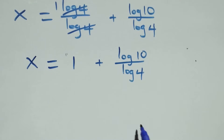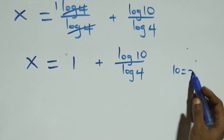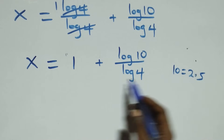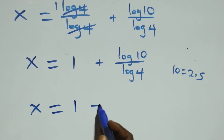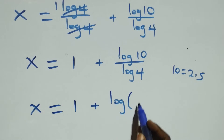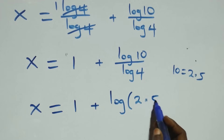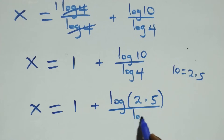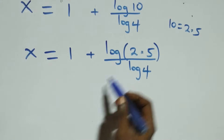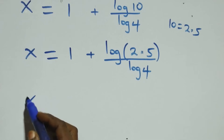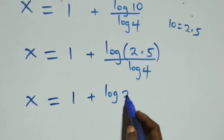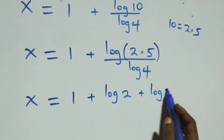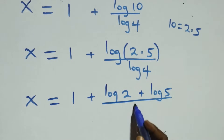From here we can express 10 as 2 times 5, so this becomes x equals 1 plus log of 2 times 5 over log 4. This also follows the product rule of logarithm, giving x equals 1 plus log 2 plus log 5, all over log 4.